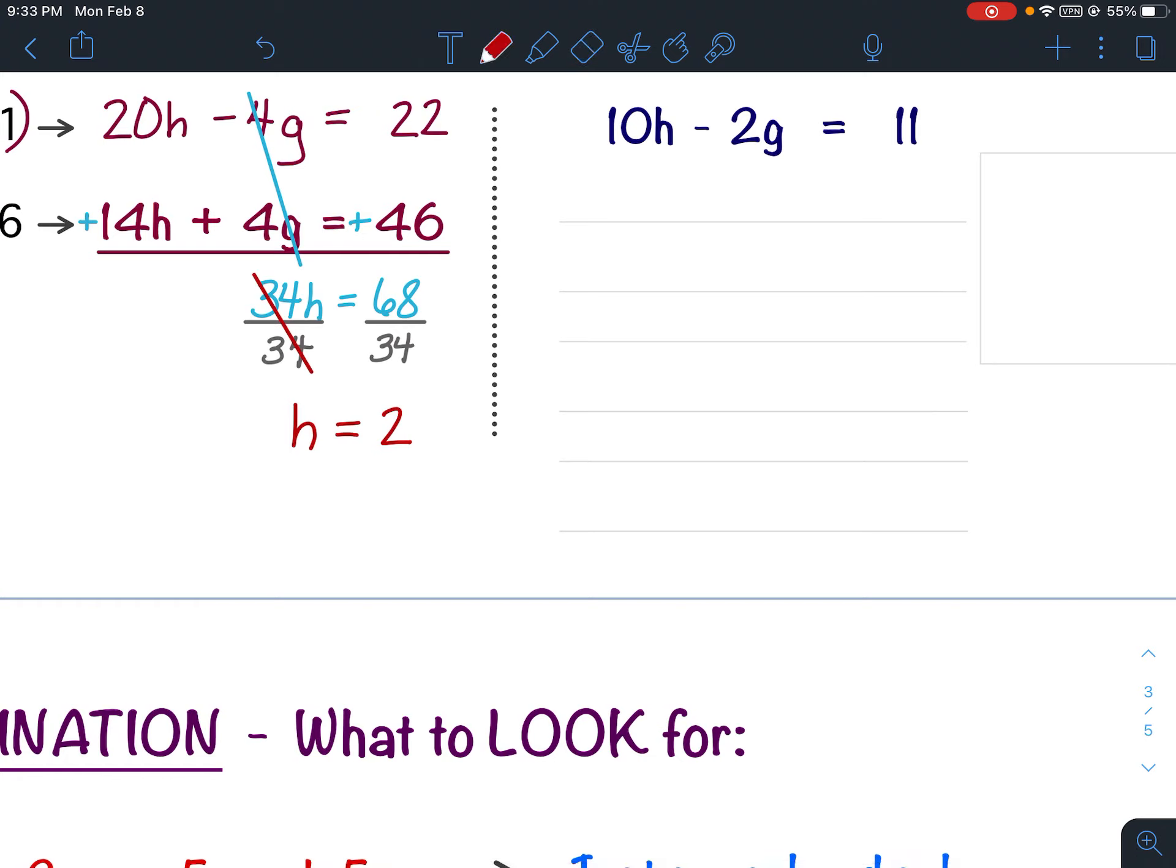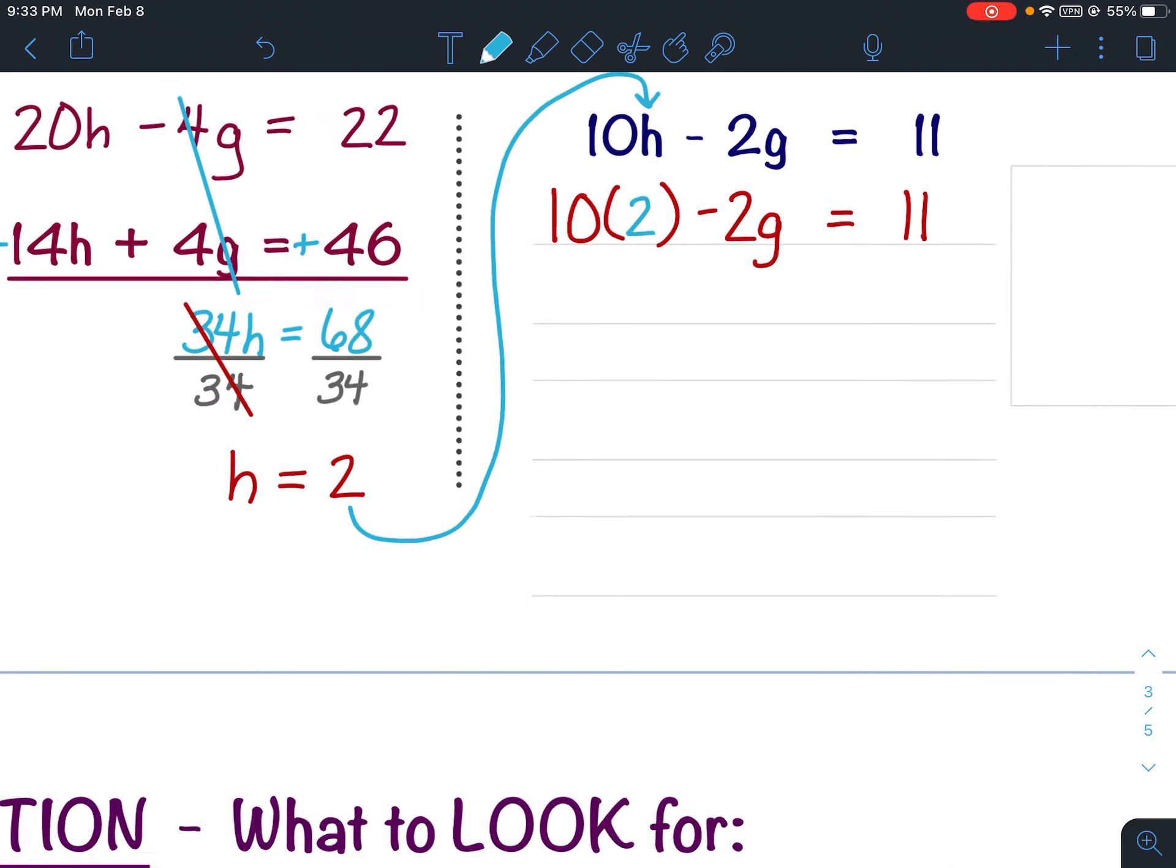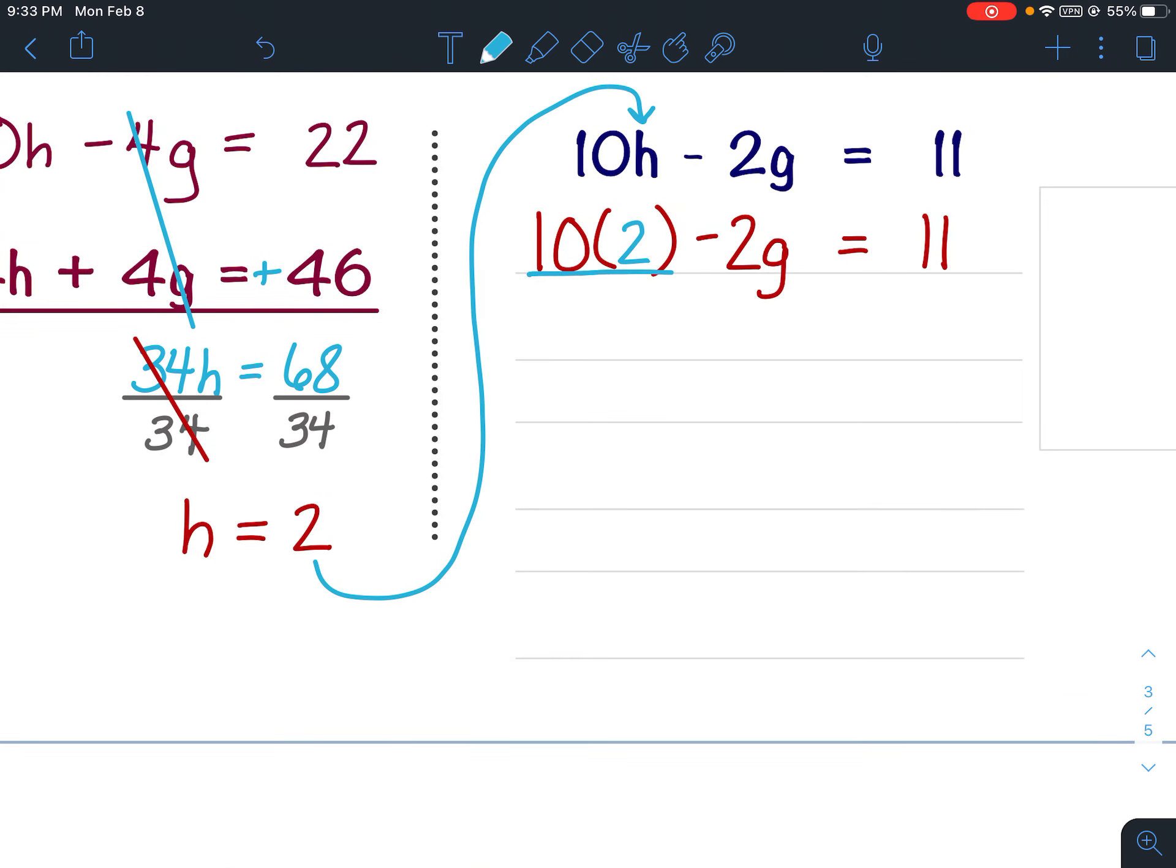10h minus 2g equals 11. Since I solved for h, that's where the parentheses go. So I'm going to have 10, parentheses, minus 2g equals 11. And that 2 will replace the h. So I'm going to start with my multiplication. Pause your video now if you need to and get everything written down.